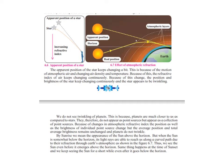But the planets do not twinkle. Why do the planets not twinkle? That is because the planets are much closer to us as compared to the stars. Therefore, they do not appear as point sources but appear as a collection of point sources. Because of the changes in atmospheric refractive index, the position as well as the brightness of individual point sources change, but the average position and the total average brightness remains unchanged.